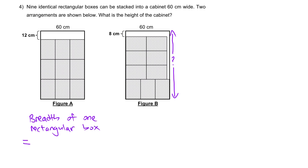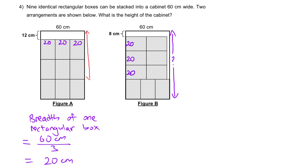The breadth of one box is 60 cm divided by 3, which gives 20 cm. So we have 20, 20, 20. Transferring this to the other arrangement: we also write 20, 20, 20, 20. At this point we can say the entire length here is made up of 8 plus 20 plus 20 plus 20, giving 68 cm. From here we can deduce the length of one rectangular box: take 68 cm minus 12 cm, then divide by 2.